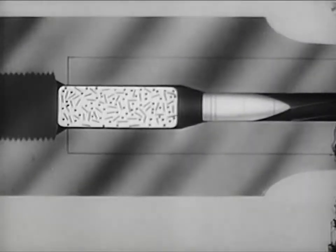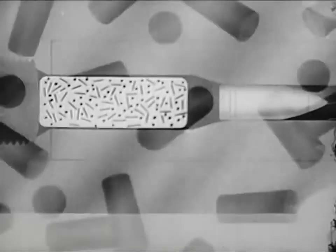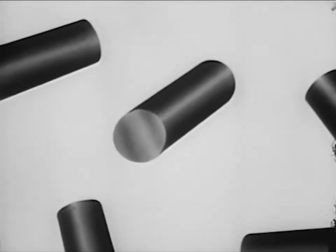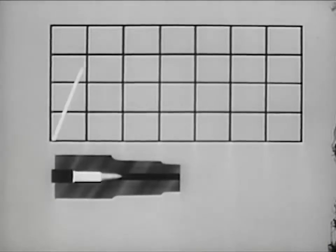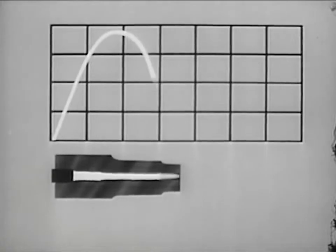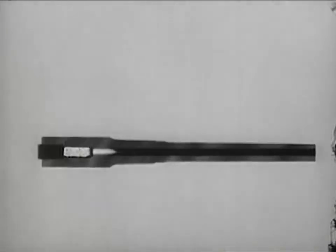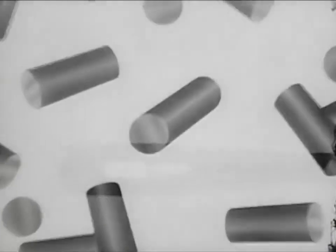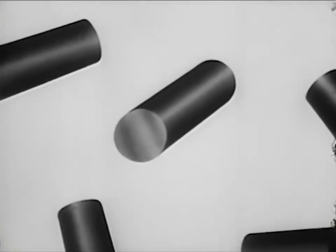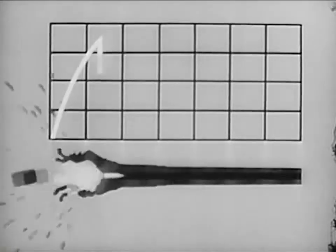For a short-barreled weapon, a small digressive grain should be used. This builds up maximum pressure quickly to accelerate the projectile in a short space without undue burning afterward. This kind of pressure action is just what we want for low-velocity weapons, such as mortars or pistols. But if we use digressive grains in a long-barreled gun, there's a chance that the higher maximum pressure produced will blow it up.